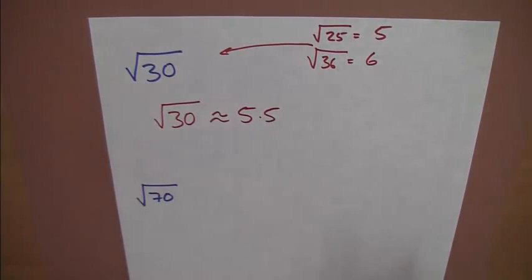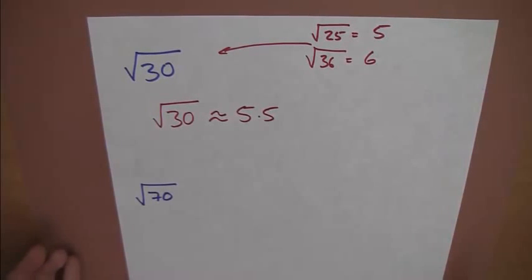It's 5.5. So, the square root of 30, we're saying roughly, is about 5.5. I could be off, I could be wrong. I probably am wrong, but it's just an estimate.